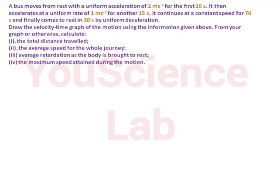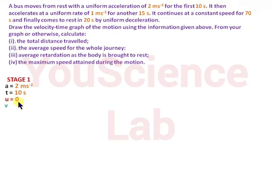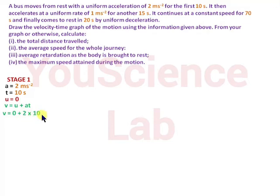In stage 1, the acceleration is equal to 2 meters per second squared, the time is equal to 10 seconds, and the initial velocity is equal to zero. The final velocity attained was not given, so we calculate it using v = u + at. So v is equal to zero plus 2 times 10, which equals 20 meters per second.